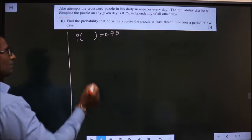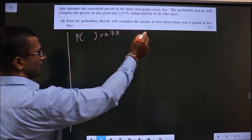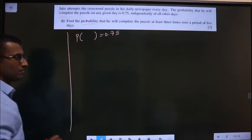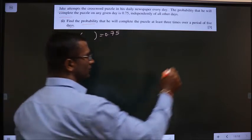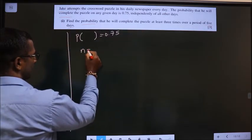Now find the probability that he will complete the puzzle at least 3 times over a period of 5 days. Over a period of 5 days, so the value that n will take is 5.